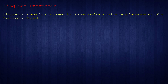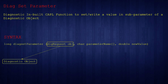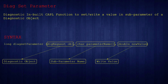We will see what DiagSetParameter is. It is a diagnostic built-in CAPL function used to set or write a value in a subparameter of a diagnostic object. The syntax for this function is shown here. The function itself returns a data type of long and takes three arguments: the DIAC request object, parameter name, and new value. The DIAC request object refers to the diagnostic object instance, and the parameter name refers to the subparameter of the diagnostic object whose data type is numerical.